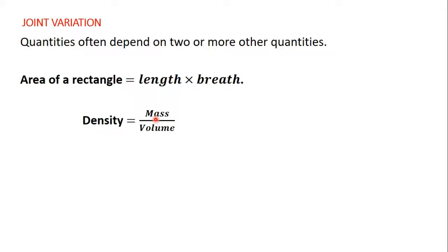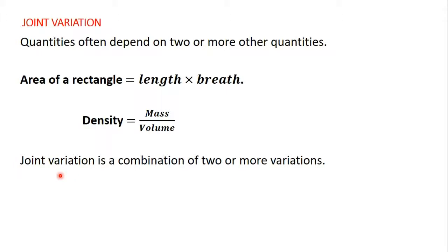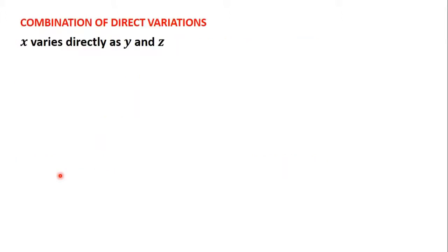If you have such a relationship where a quantity depends on two or more other quantities, that type of relationship is referred to as a joint variation. Joint variations combine two or more other variations. We are going to consider three cases of such combinations. The first one is when you have a combination of direct variations.